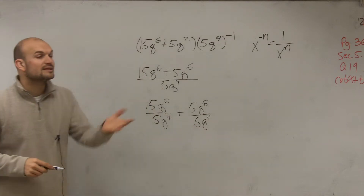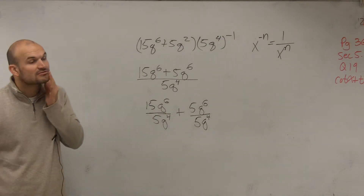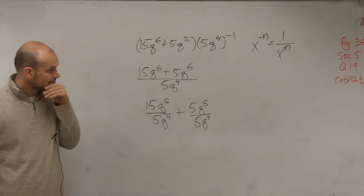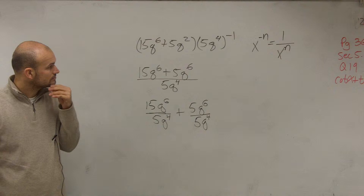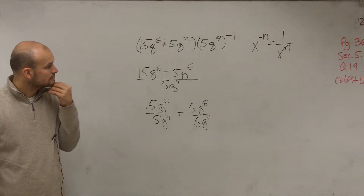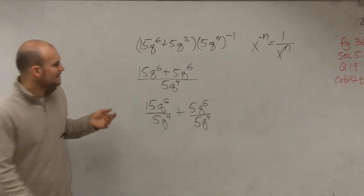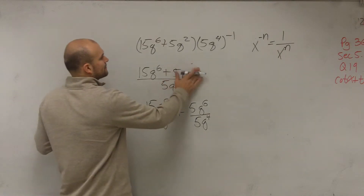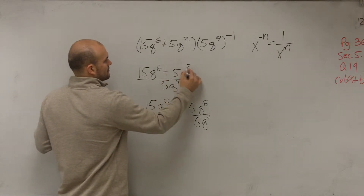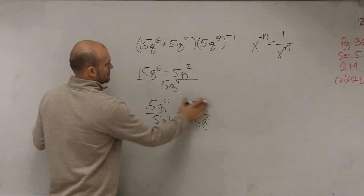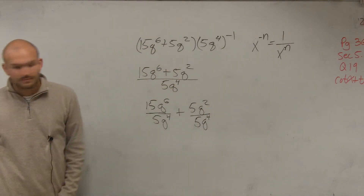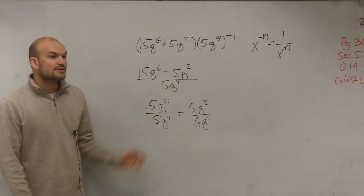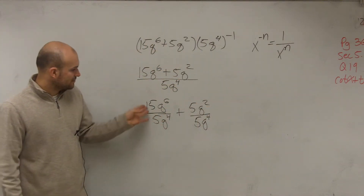So we split it up. You're right — this one is 5q squared from the original problem. So then you just divide.